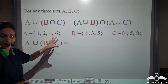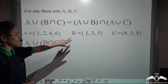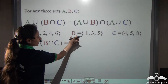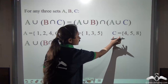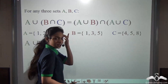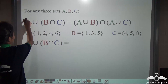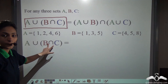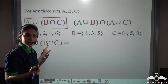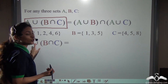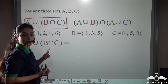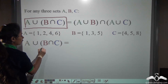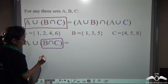Here we have taken three sets: A = {1, 2, 4, 6}, B = {1, 3, 5} and C = {4, 5, 8}. Can you help me find the left hand side part — A union (B intersection C)? You know how to take intersection and union between two sets. Find this out and tell me.